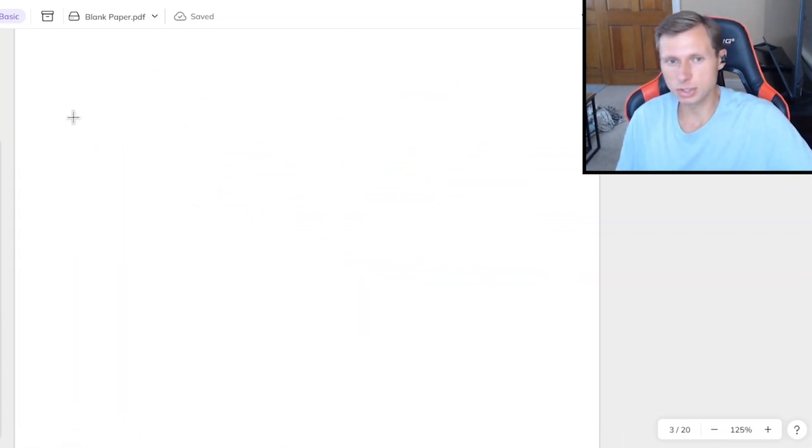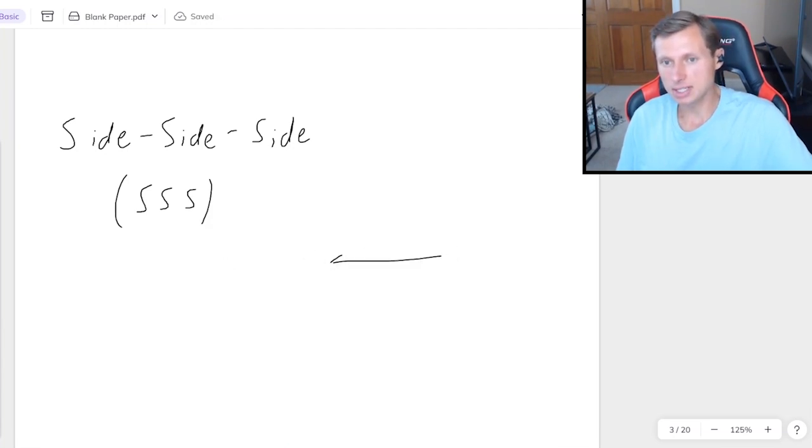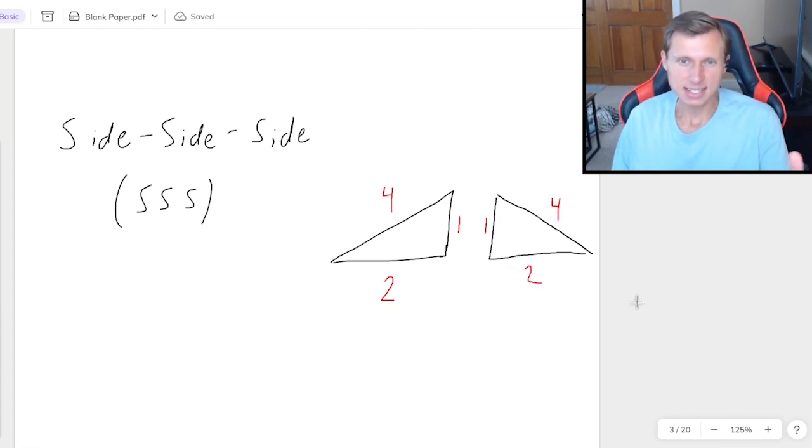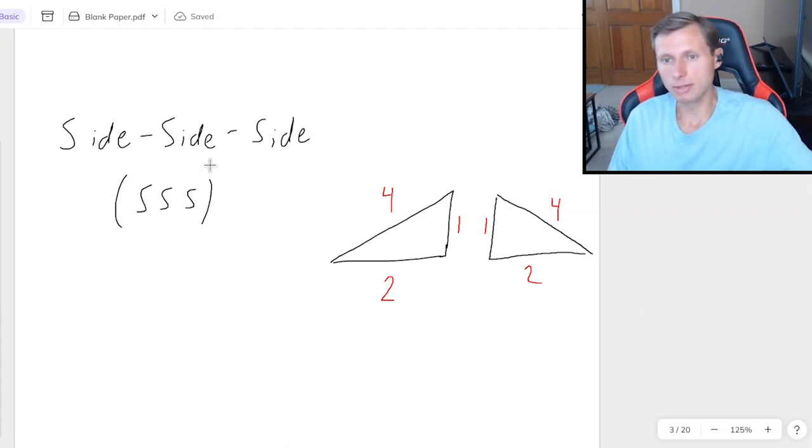So for instance, the first triangle congruency theorem I'll talk about today is the side side side theorem, which we always call SSS for short. And what that basically means is that if I have two triangles and their side lengths are all the same, then we can say by SSS, these two triangles are congruent and therefore I automatically know that all the angles will be equal to each other too. But what's most important is that we just say they're congruent. So that's one of the theorems.